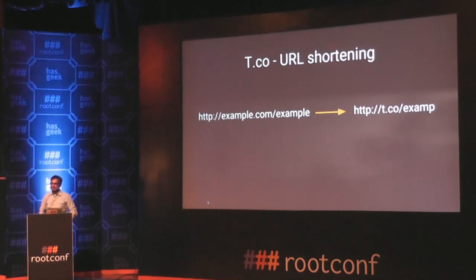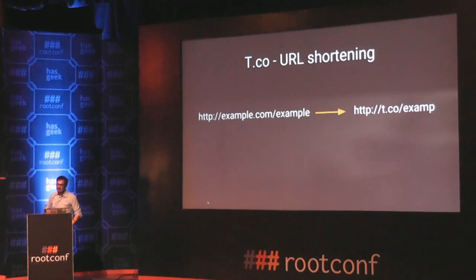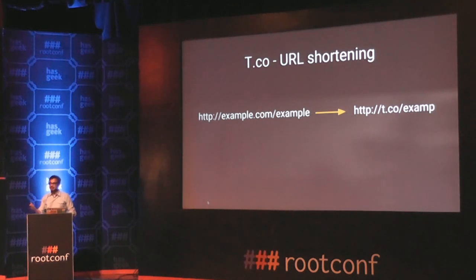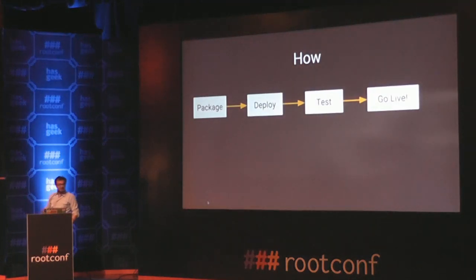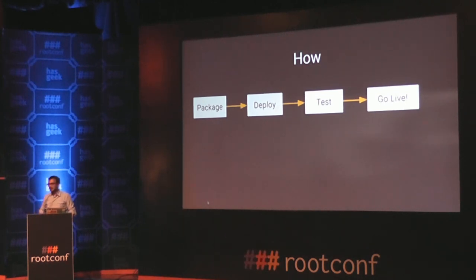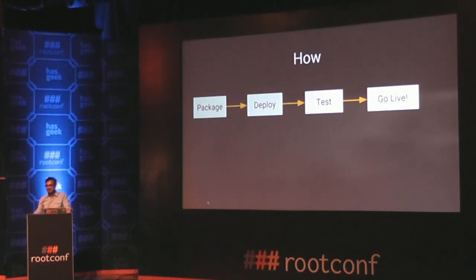The service I migrated from a standalone host to Mesos is called t.co — Twitter's URL shortening service. When you tweet a URL, it gets converted into a t.co link. The service was running on around 20 servers across multiple data centers. We migrated it to 20 jobs running on a shared pool of machines that were shared with other teams.